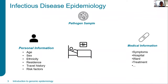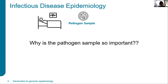But when you go to infectious disease epidemiology, there is a next layer: that is the pathogen. There is a next layer now — in recent years — and this is the pathogen sample. So you can learn from the patient, from the medical information, but also from the pathogen. And why is this so important? Does having the pathogen sample change a lot?